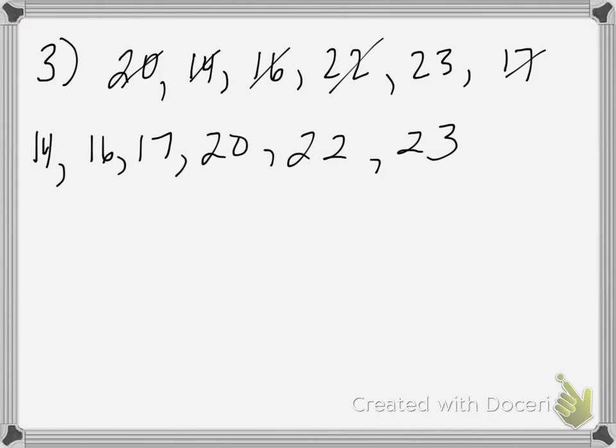Now that the data set is in order, I'll suggest starting from the outside and crossing off working toward the center: cross off the 14 and the 23, then the 16 and the 22. We're left with two numbers: 17 and 20.